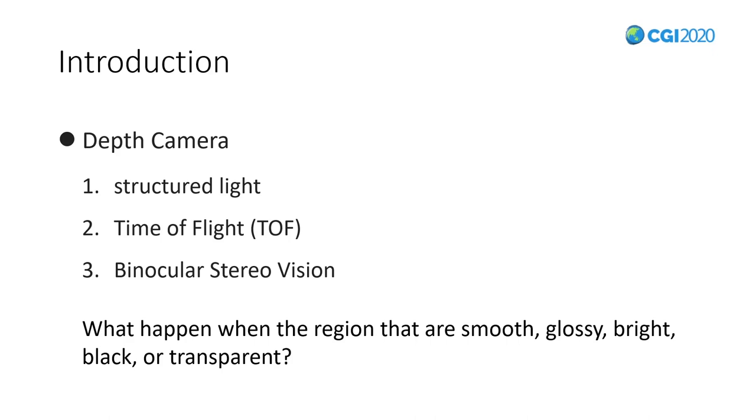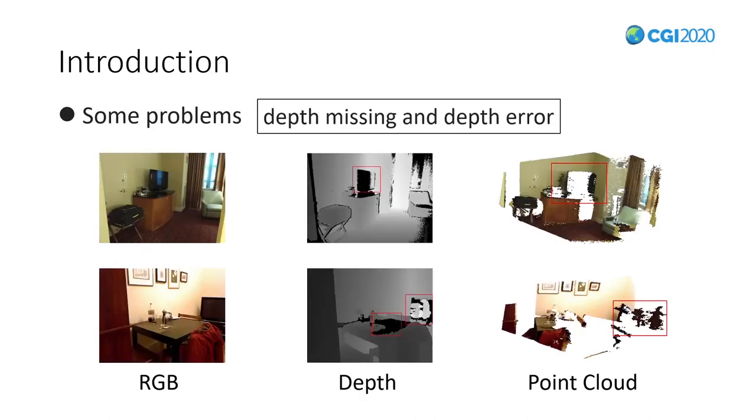But what happens when the region we shoot with depth camera are smooth, glossy, bright, black, or transparent?